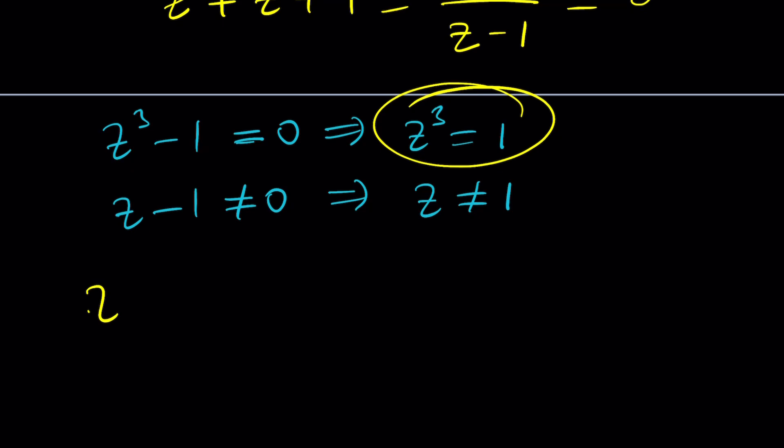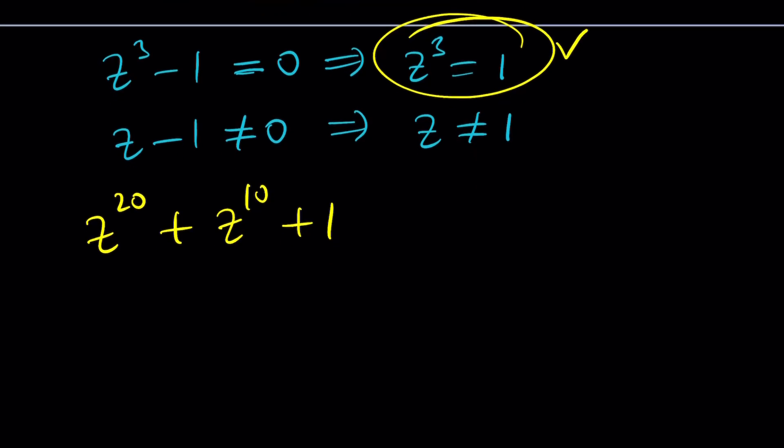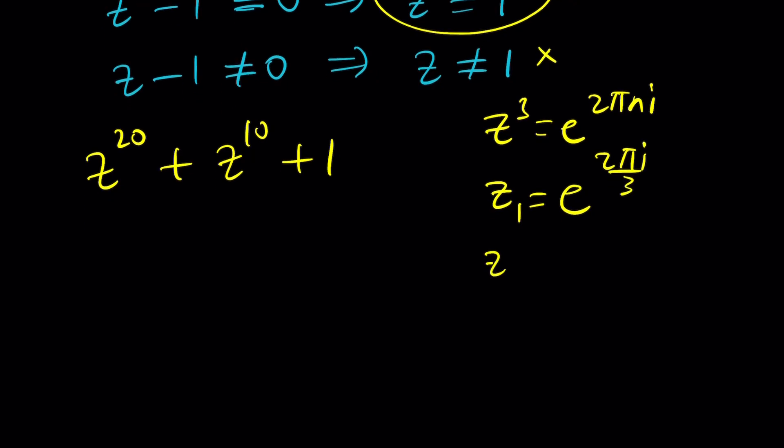We have z²⁰ + z¹⁰ + 1. Now, we're supposed to evaluate this and I know that z³ = 1 and z ≠ 1. This means that z can be written as a cube root of 1. If z³ = e^(2πi), then one of the cube roots can be written as e^(2πi/3) for n = 1, and then the other one can be written as e^(4πi/3) and the third one is going to be e^(6πi/3) or just e^(2πi) which is actually the same thing as 1 but remember, z can't be 1 so we're going to discard it and use one of these.